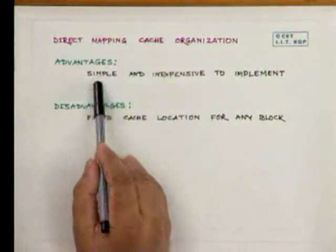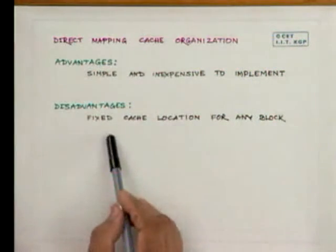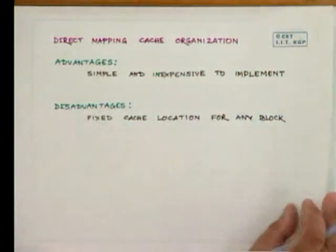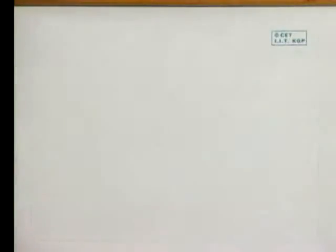We are discussing cache memory organization. We have seen how direct mapping can be implemented. There are advantages because direct mapping is simple and therefore inexpensive. But there are disadvantages since direct mapping is many-to-one, meaning many memory locations may be mapped into one cache line, causing contentions and reducing the hit ratio. The miss ratio may increase. The advantage is it is simple and inexpensive to implement; the disadvantage is fixed location for any block, so contention may increase.